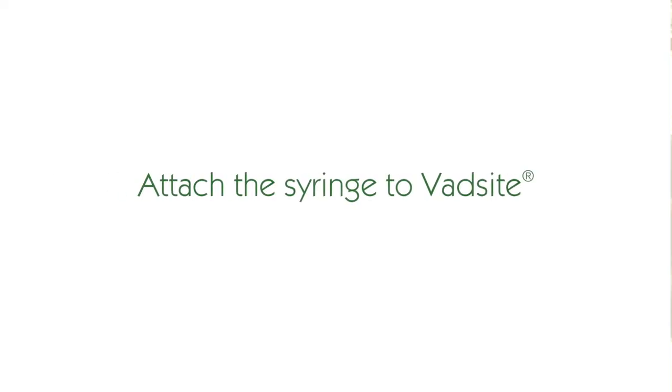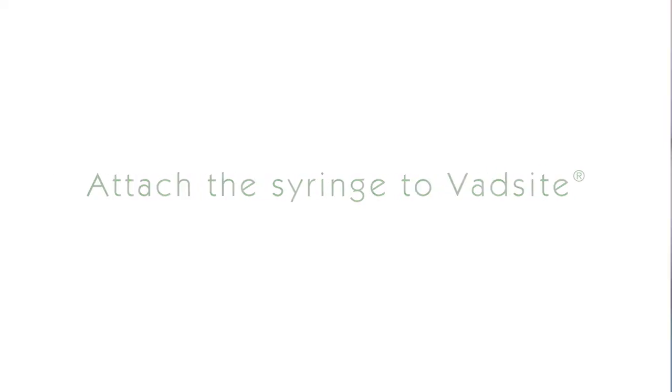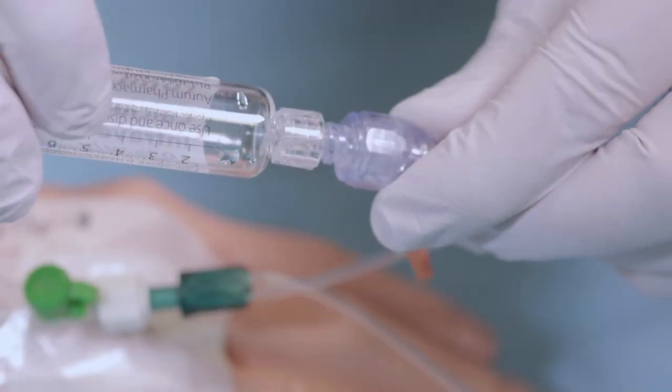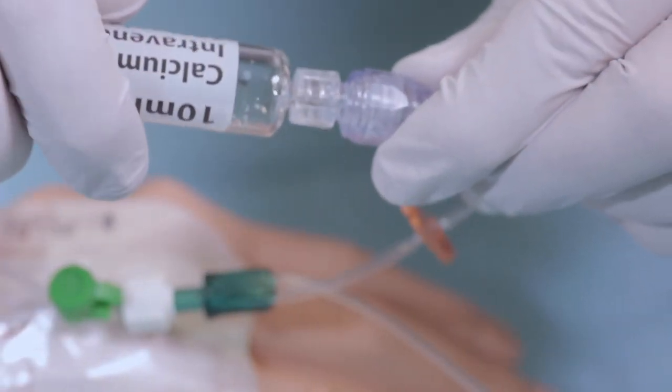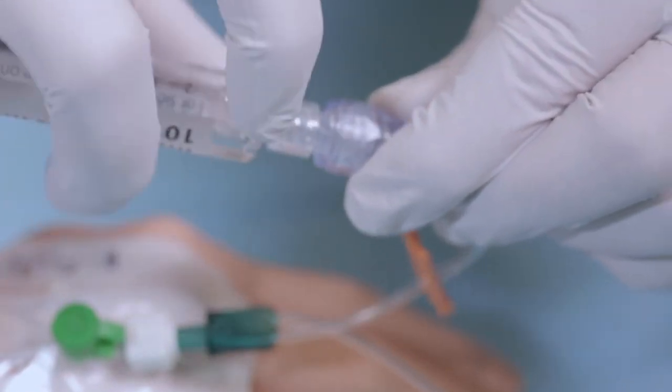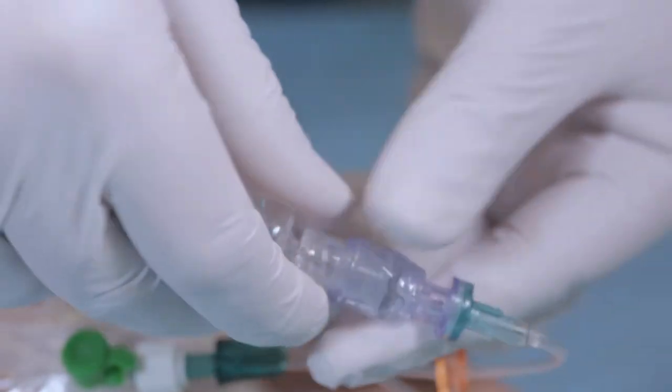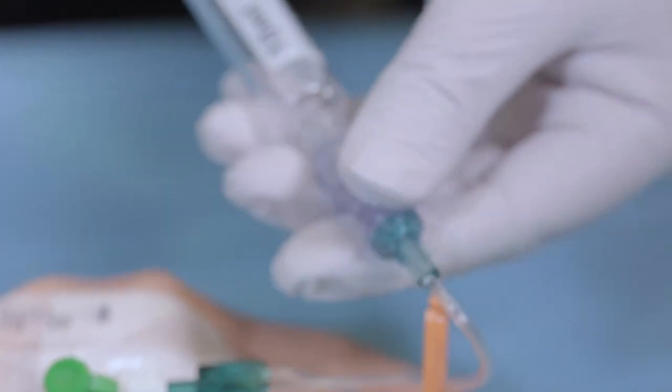Step 3. Attach the syringe to VADSight. Push and twist the syringe clockwise onto the VADSight holding the barrel of the syringe. Ensure the locking collar is hand tight before administering the drug.